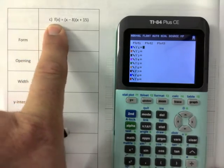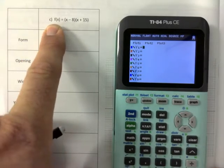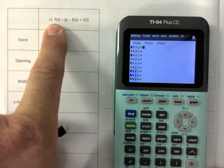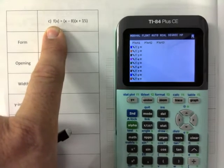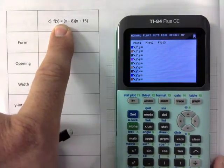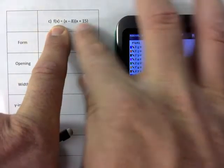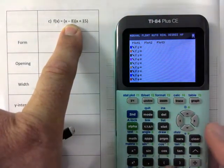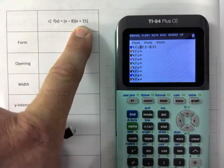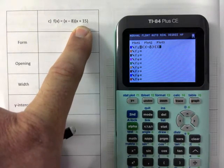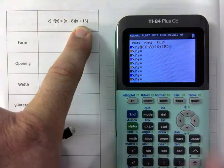By the way, f of x shouldn't scare you, right? It's the same thing as y. In IPR, you learned about function notation versus just the equation. So don't let that throw you off. So you just type this in the right hand side, exactly the way it is there, right? So x minus 8 bracket x plus 15. Take a minute to check.